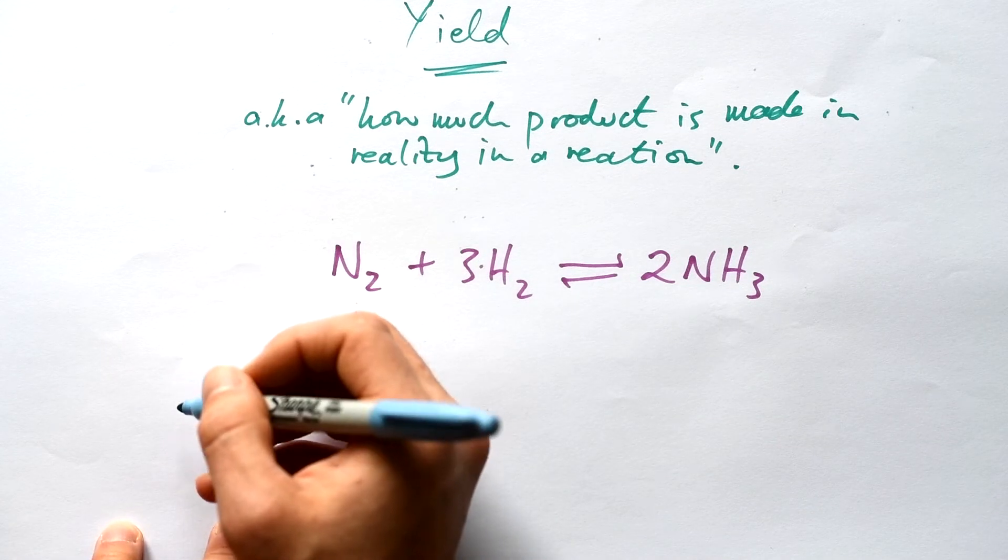A perfect example is the Haber process. The equilibrium position depends on temperature and pressure. Let's say we have 1000 grams (a kilogram) of nitrogen going in. We can ask how much ammonia (NH3) is made from 1000 grams. We can actually use atom economy for this, even though we've only got one reactant here - it'll still give us the right answer.